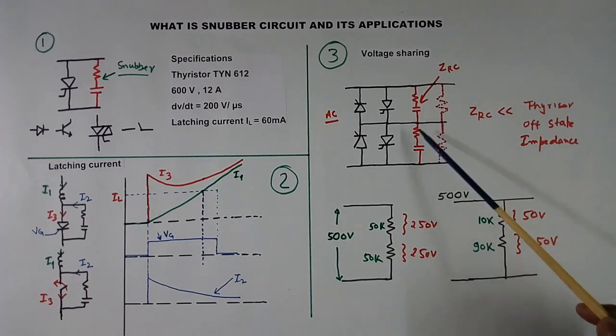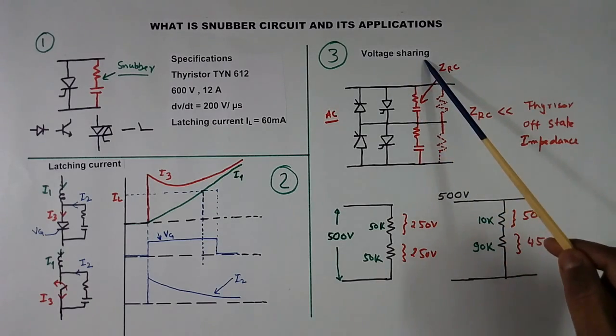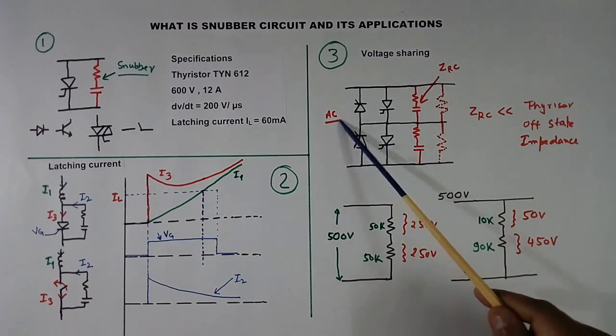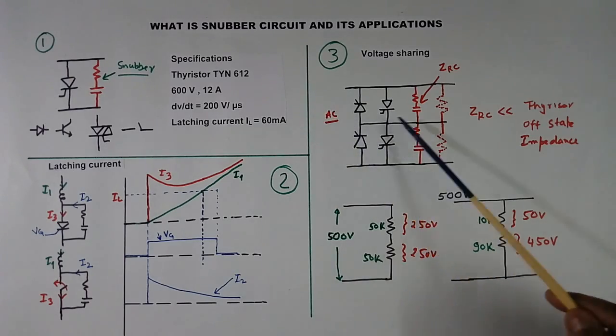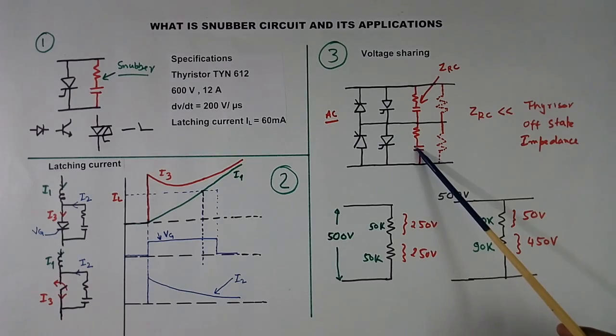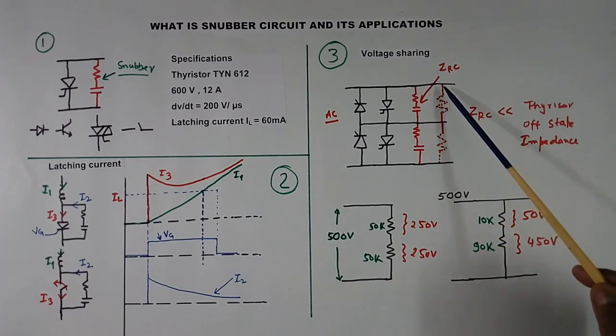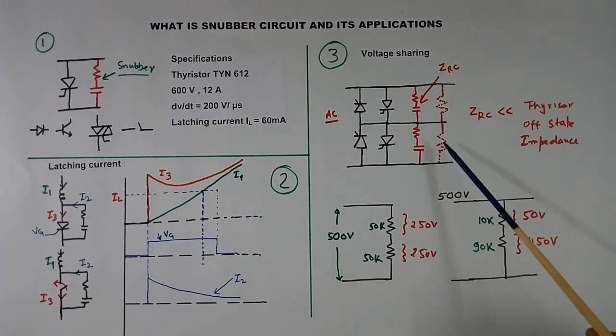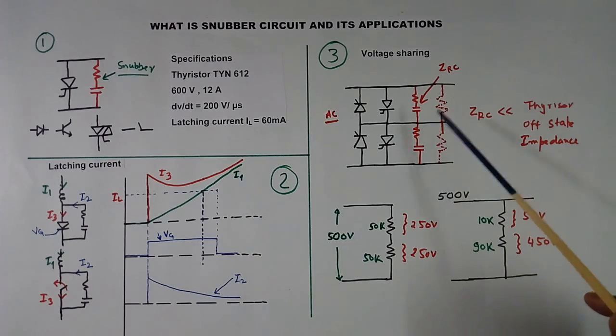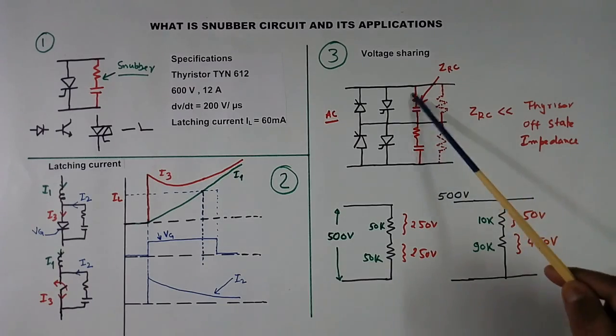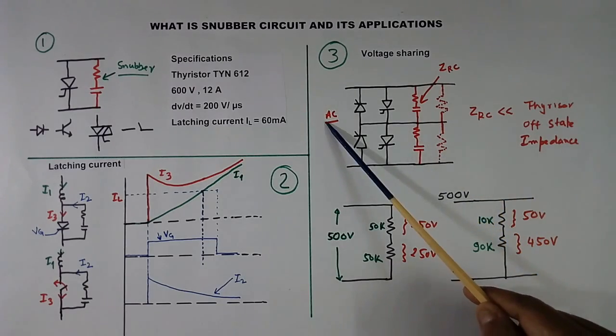But this snubber circuit will help in voltage sharing if you give AC voltage. If you give DC voltage, it does not help in improving voltage sharing. In that case, one resistor is connected in parallel of this. This is not snubber circuit. We connect one resistor here and here. This decides the voltage sharing. This helps only during AC input.